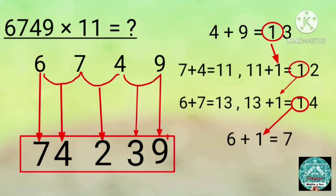Then add 6 and 1, that's carried. 6 plus 1 equals 7. So the answer is 74,239.